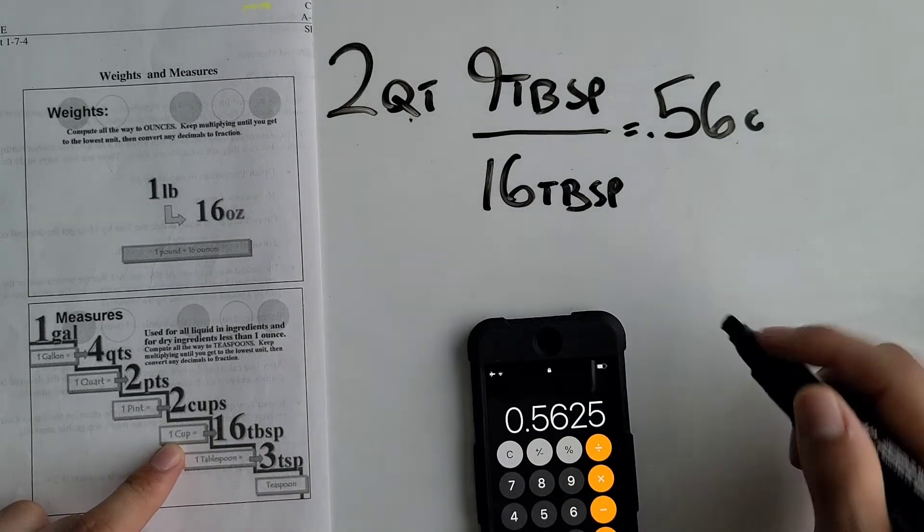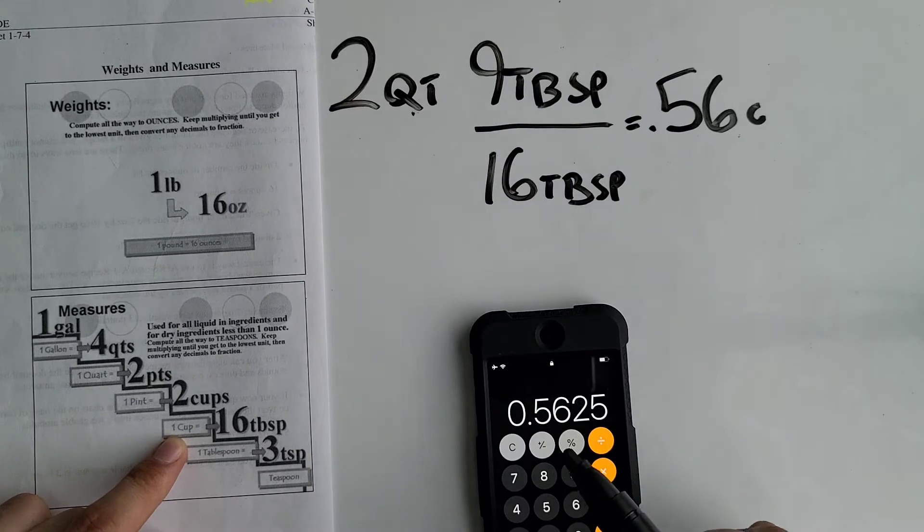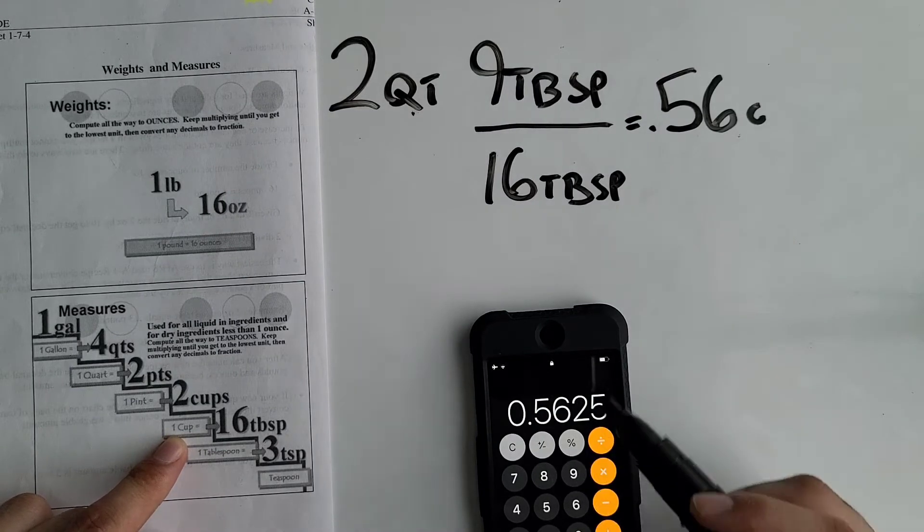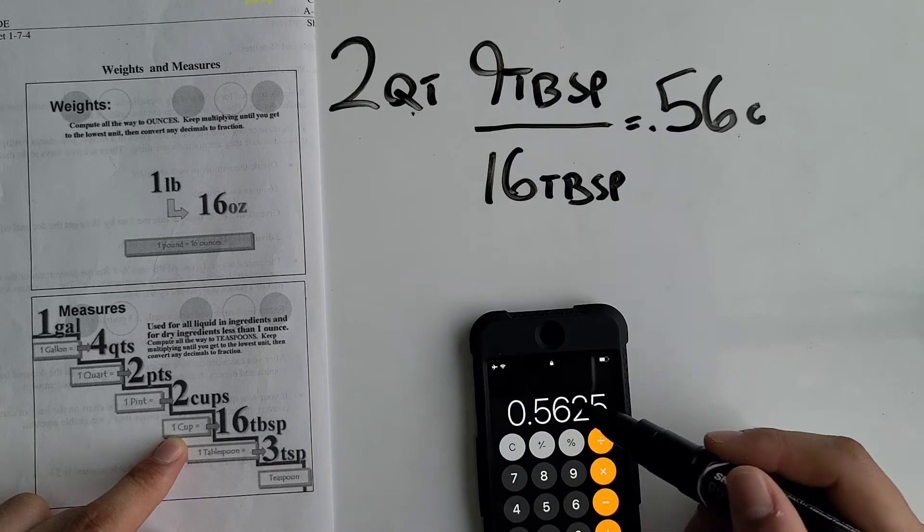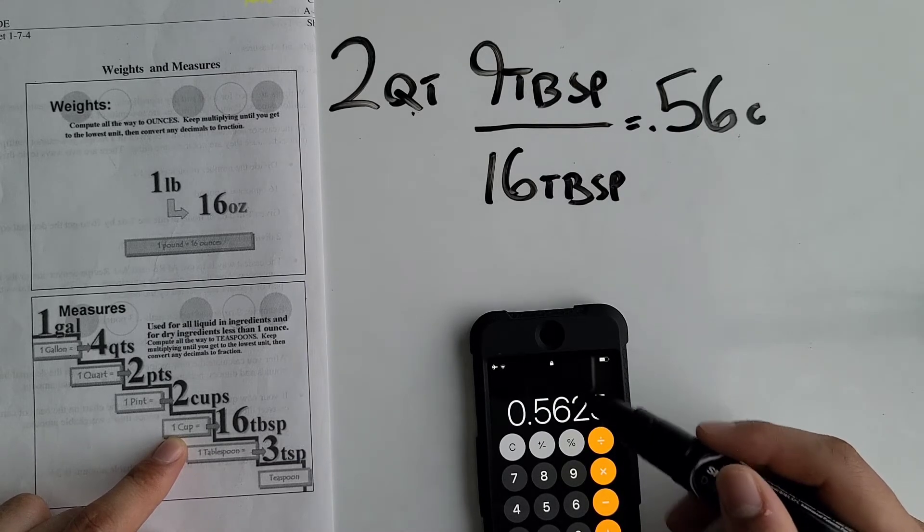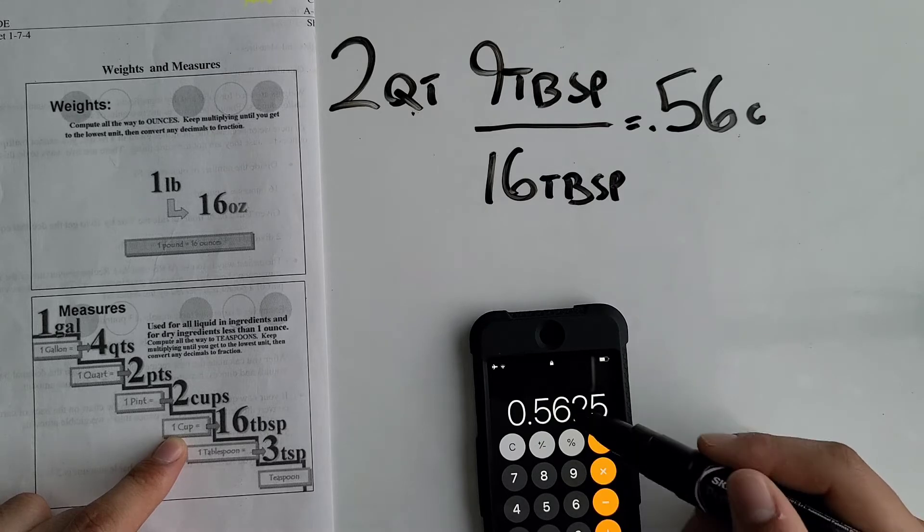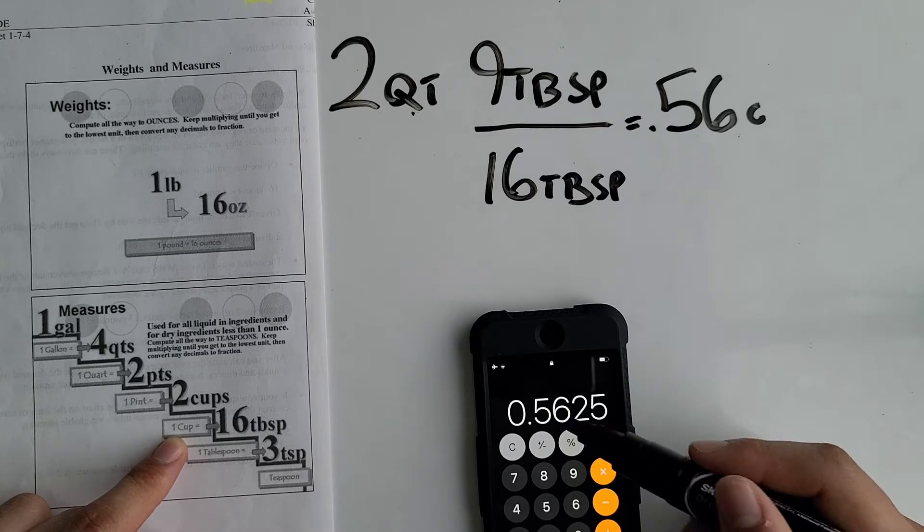We're at cups right now. The reason for that is we have to round it to the hundredth place. If it's five or above this third number you round up. If it's four or below you leave it like that. Since it's below four we just leave it like this.